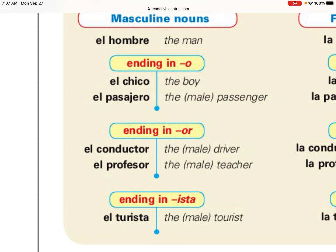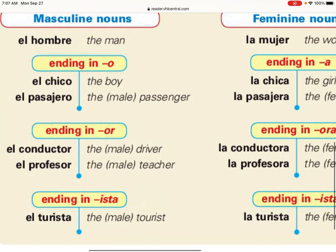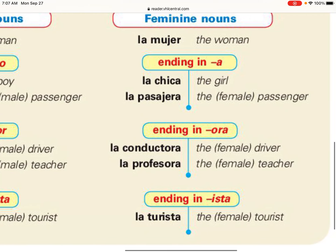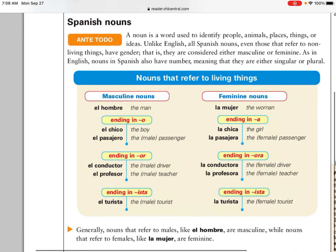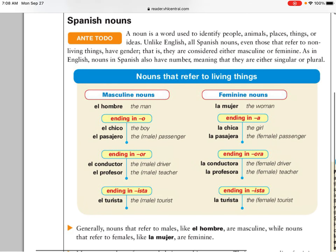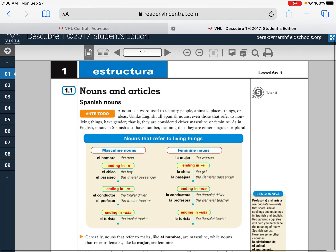For feminine living nouns: 'mujer' is a woman, so that's obviously feminine. 'Chica' is girl, 'pasajera' — endings in -a are feminine. Endings in -ora, like 'conductora' and 'professora,' are feminine. And -ista words can be feminine as well as masculine.